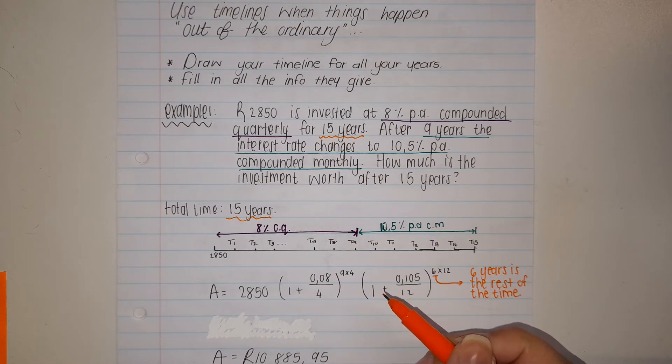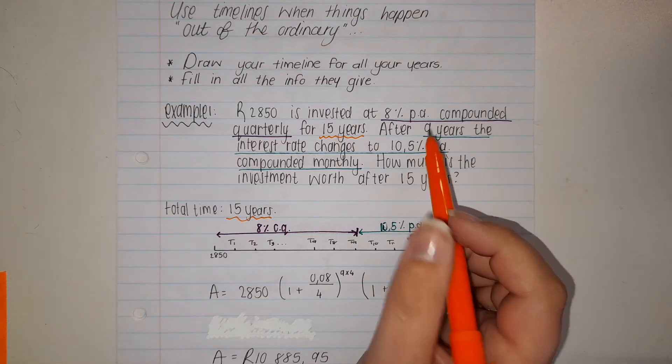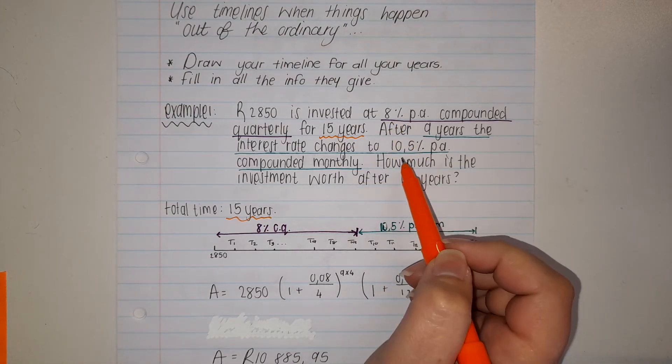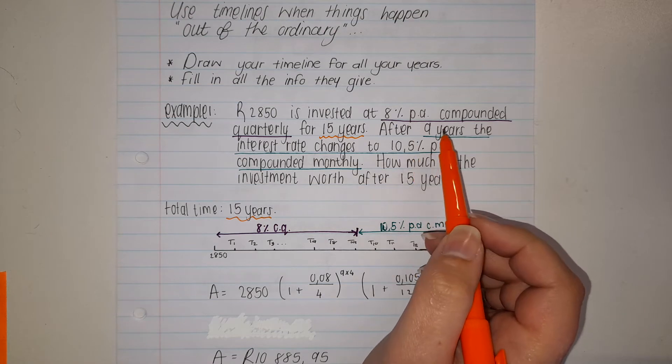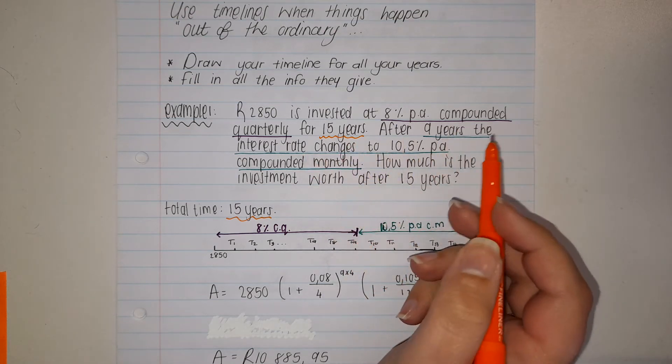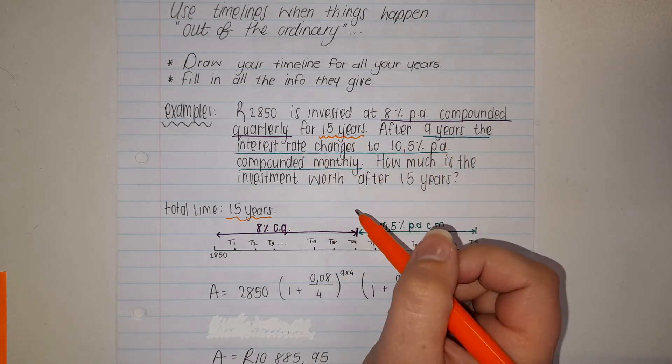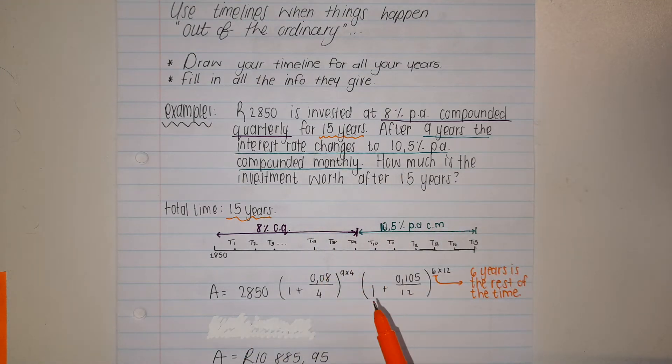Now we know our interest rate changed from 8% to 10.5%, compounded quarterly to compounded monthly. How much is the investment worth after 15 years? I went and drew my timeline for the whole 15 years.